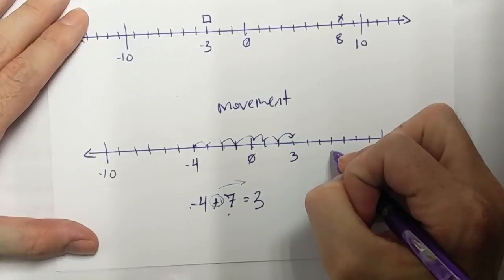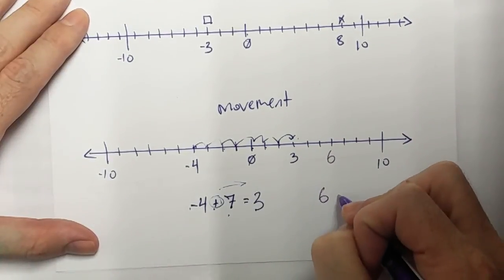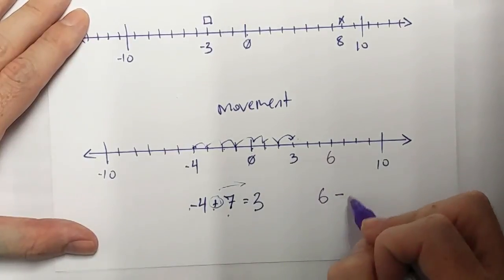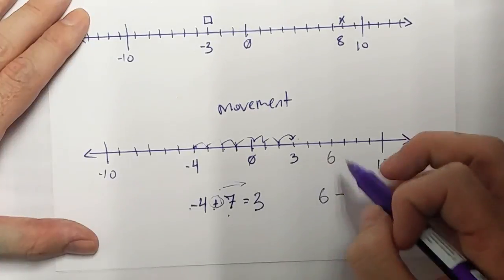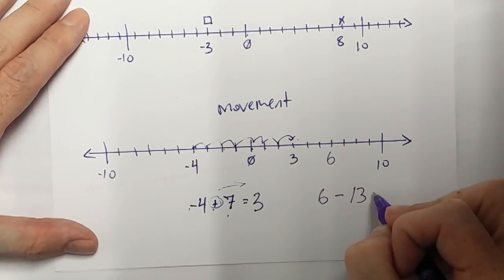Let's say I am at 6. So in my number sentence, I start at 6 and I'm going to go down or I'm going to decrease, or maybe we can even say I'm going to move to the left. Let's say 13. Where am I going to finish?